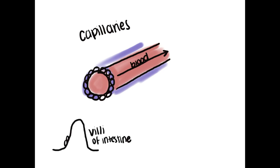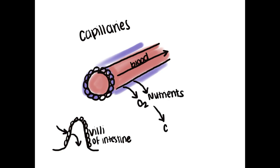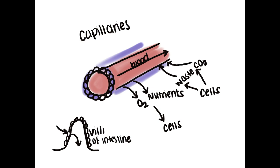For example, blood cells are able to drop off oxygen and nutrients to cells and pick up carbon dioxide and waste products. I think of the capillaries as a UPS worker — they drop things off, pick things up, and transport it.